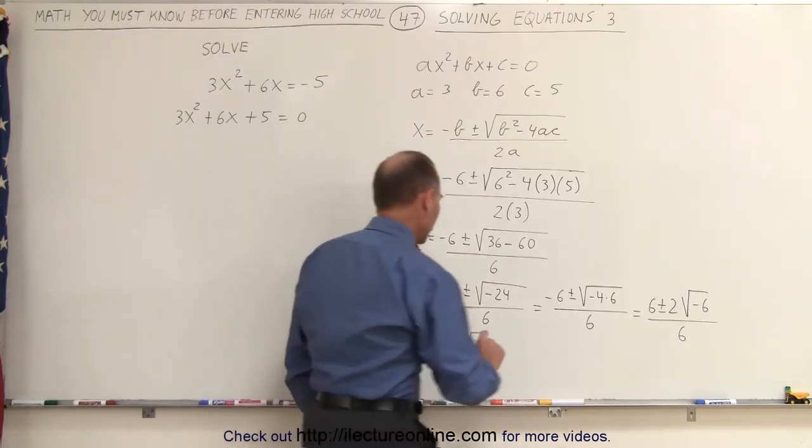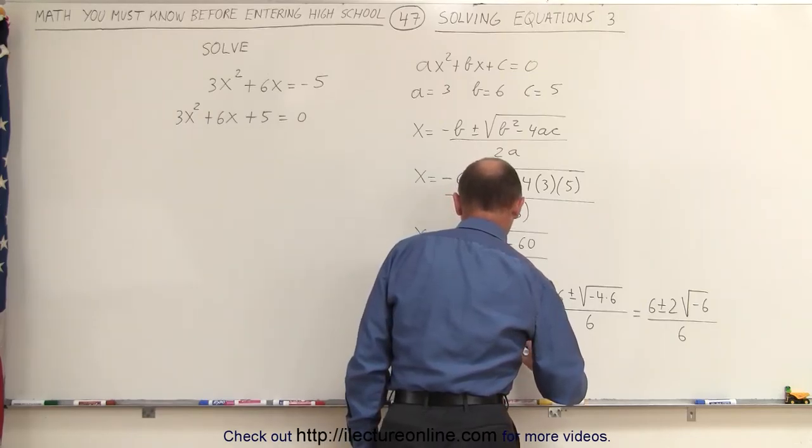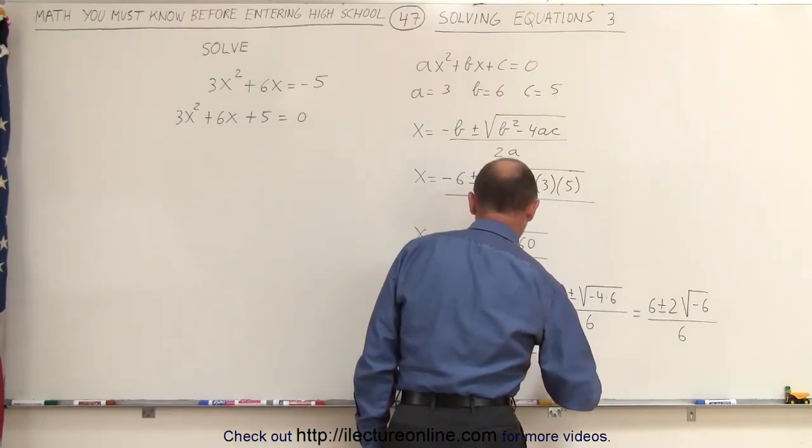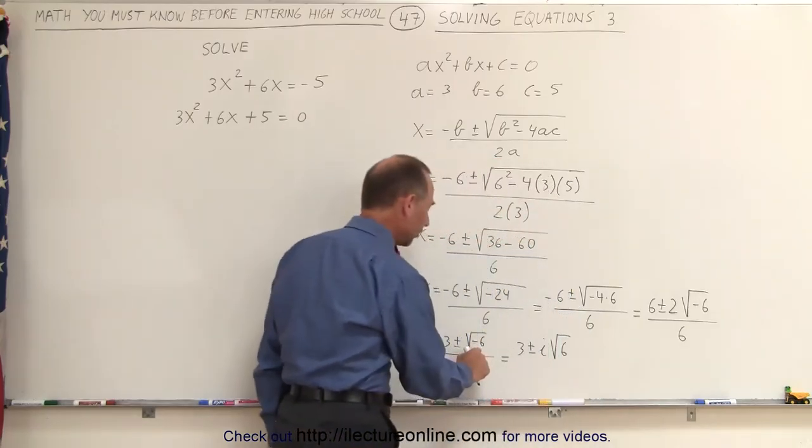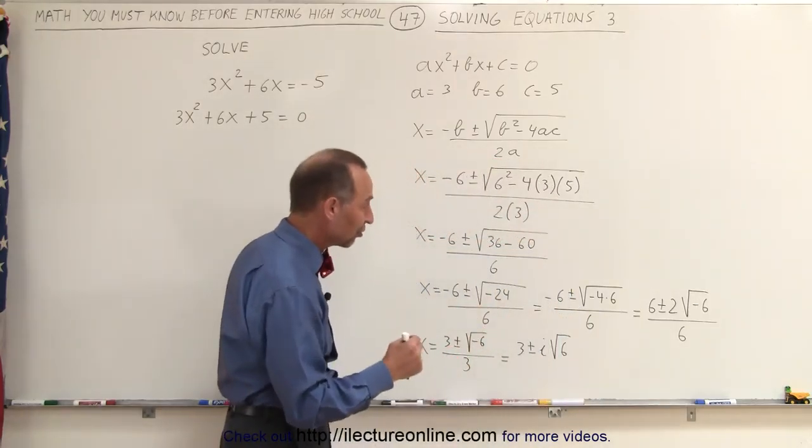Now, this can also be written as -3 plus or minus i times the square root of 6 because the square root of negative 1 is i, that's the imaginary number i.